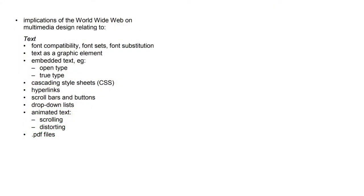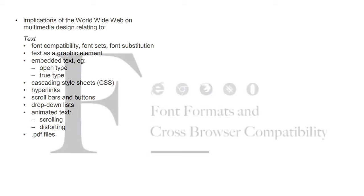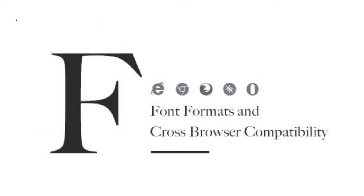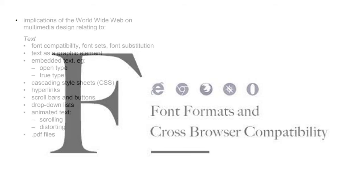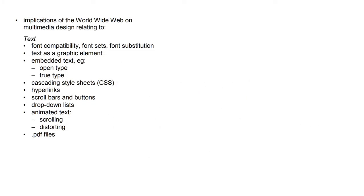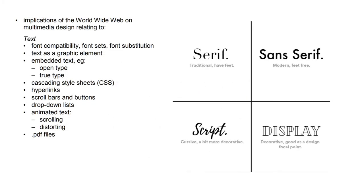First off we're going to talk about text. The main thing about text that you need to understand is font compatibility. Different web browsers have different fonts built within them, and some internet browsers will display different types of fonts depending on what you have uploaded into your computer. So if you've ever downloaded a font off the internet or gone in on a CD or USB, you can install that font and then you can use it on any design program like Photoshop.